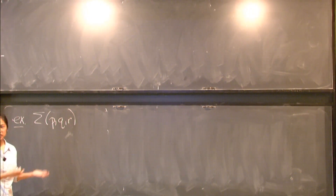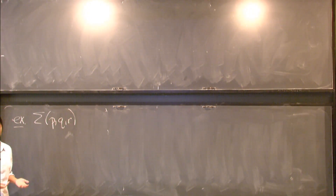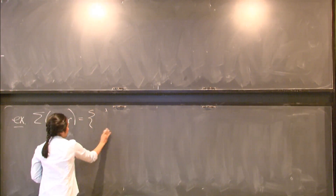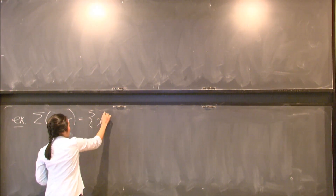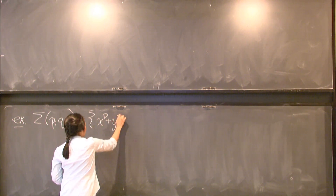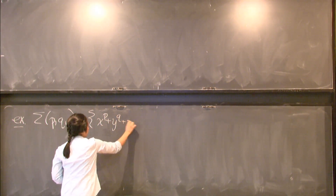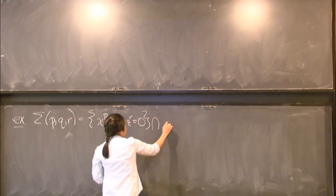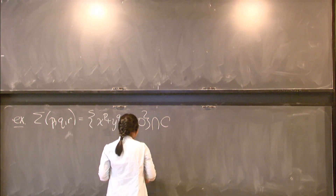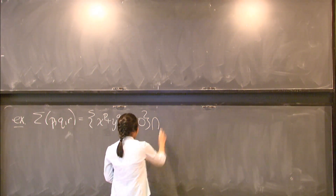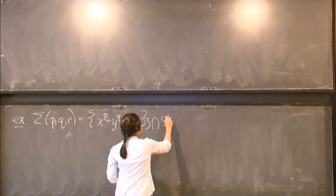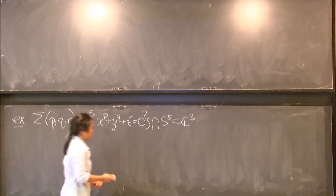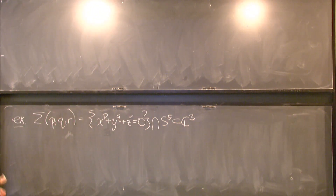This is called a Brieskorn homology sphere σ(p,q,r). It's defined as the zero locus of x^p + y^q + z^r = 0, and we're going to intersect this with the five sphere in the complex three dimensional space.